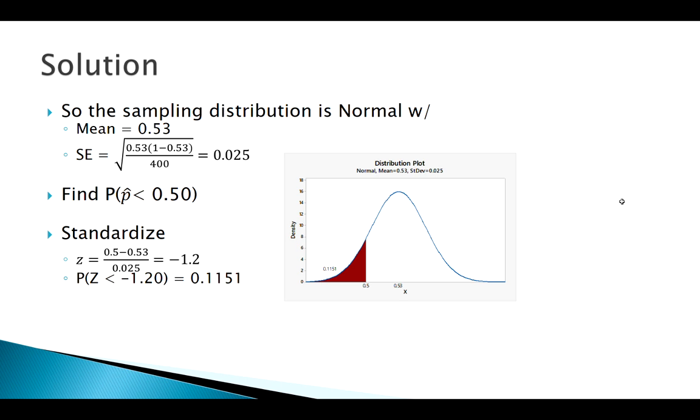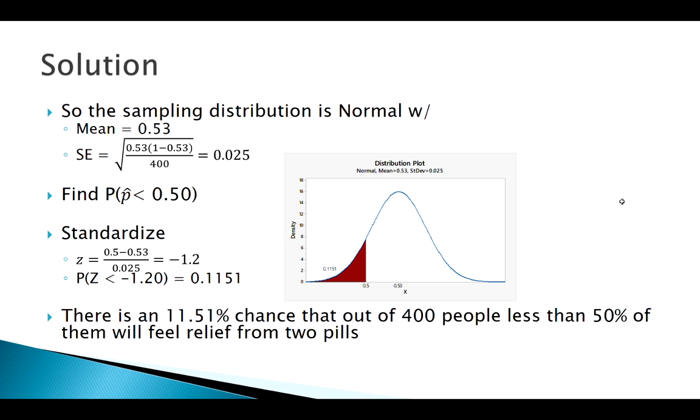All right, so we've solved our problem. Again, we want to make sure we put it in the context of the original question. So there's about an 11.5% chance that if I had a sample of 400 people, only less than 50% of them would feel relief after taking the aspirin. I hope that example helps, and I will see you guys next time.